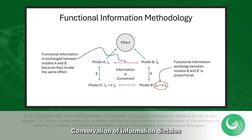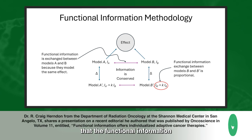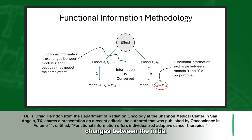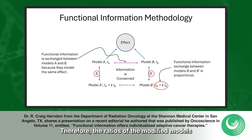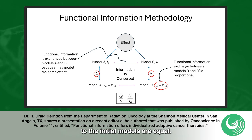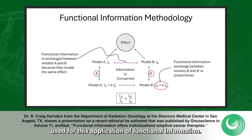Conservation of information dictates that the functional information changes between the initial and modified models are the same. Therefore, the ratios of the modified models to the initial models are equal. For example, this is the equation used for this application of functional information.